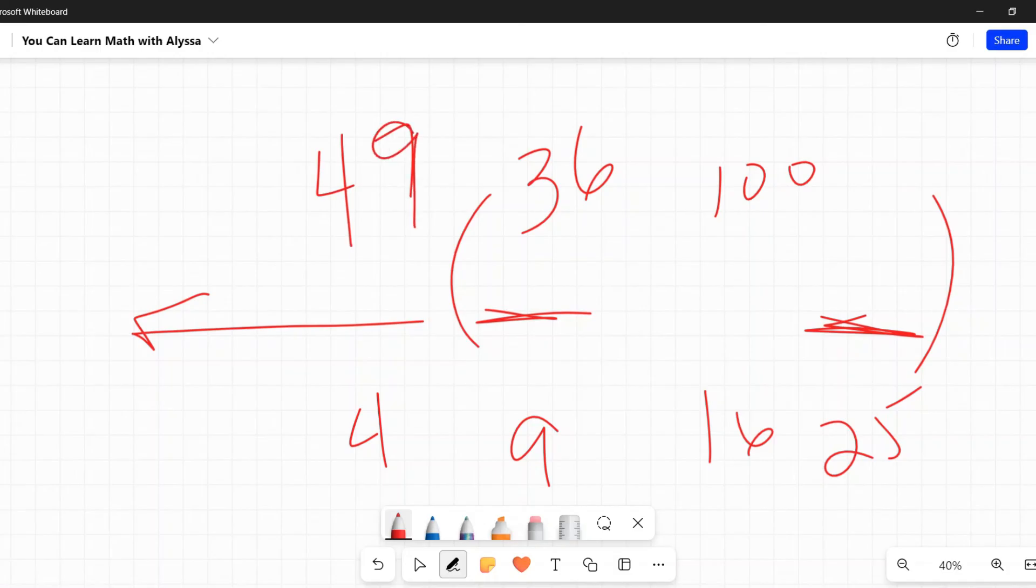If you see that, then the first thing I want you to do is to think, hey, maybe this could be a perfect square. And look a little deeper and see if it fits that pattern that we discussed. It will save you a lot of time. And they're looking for you to know that about those perfect squares and to recognize them.